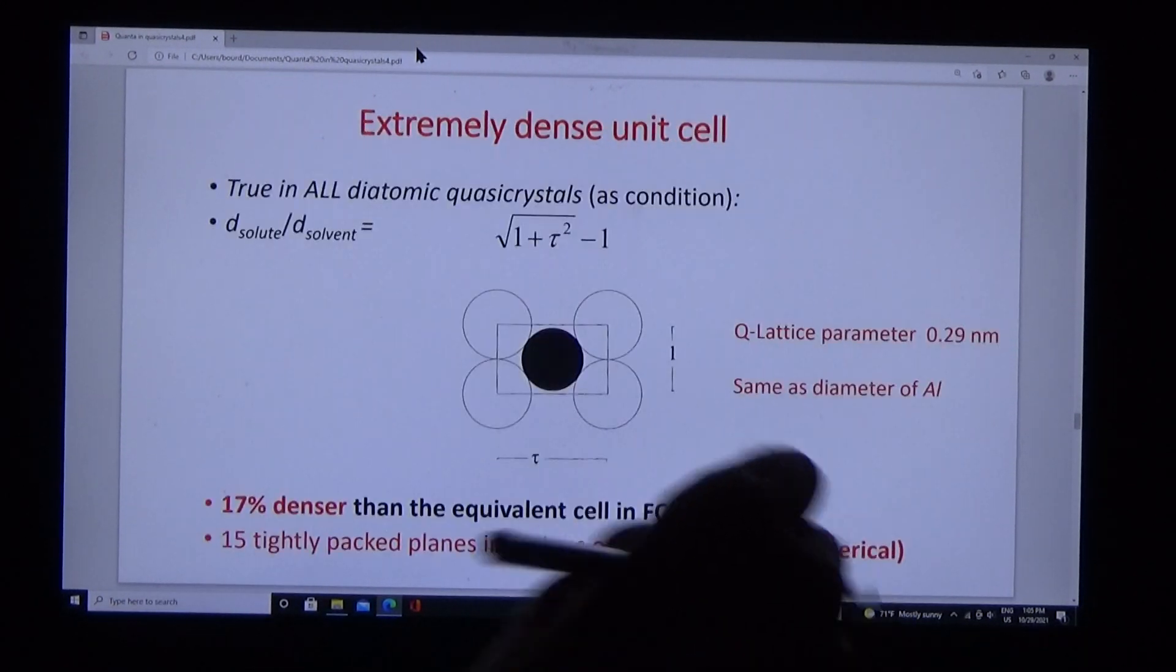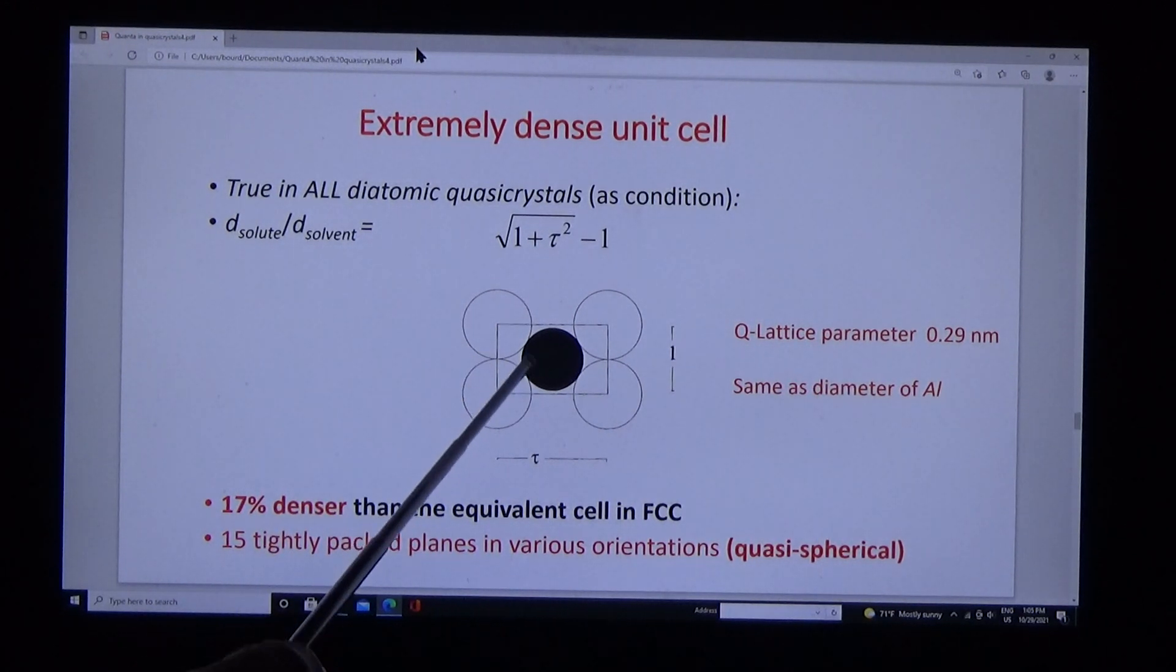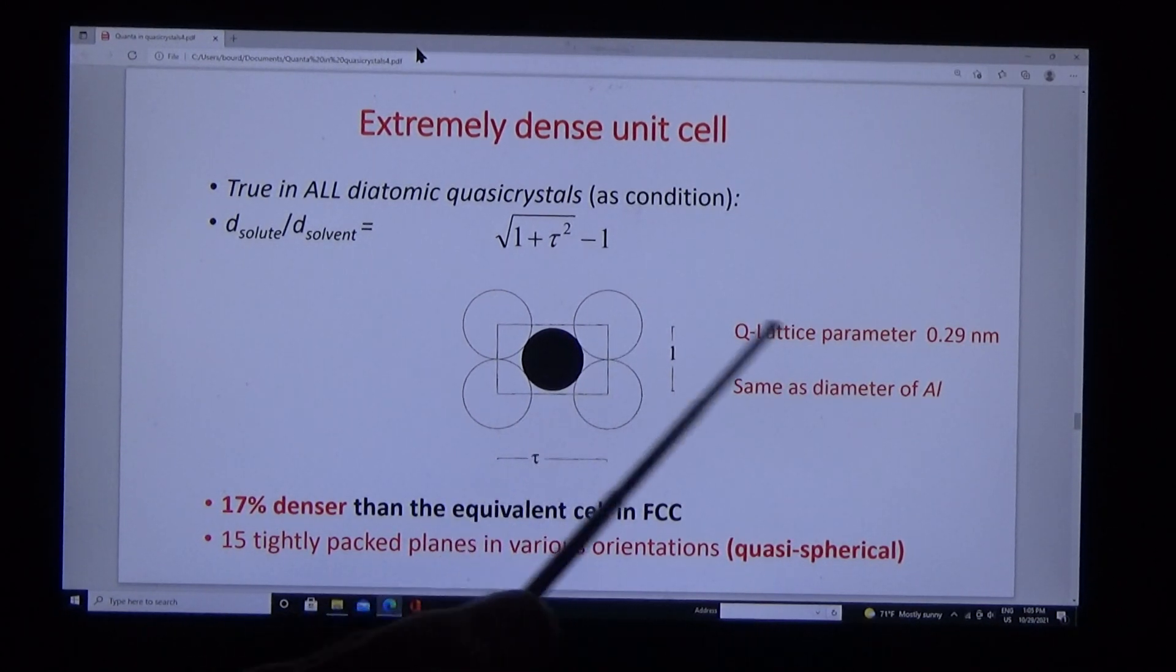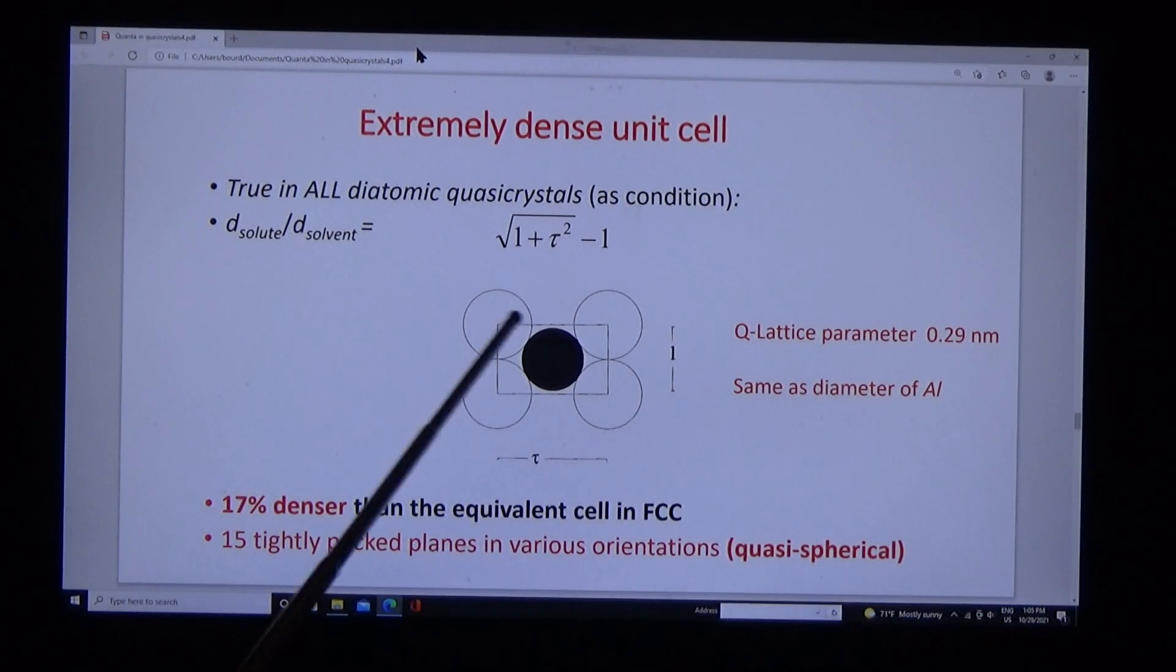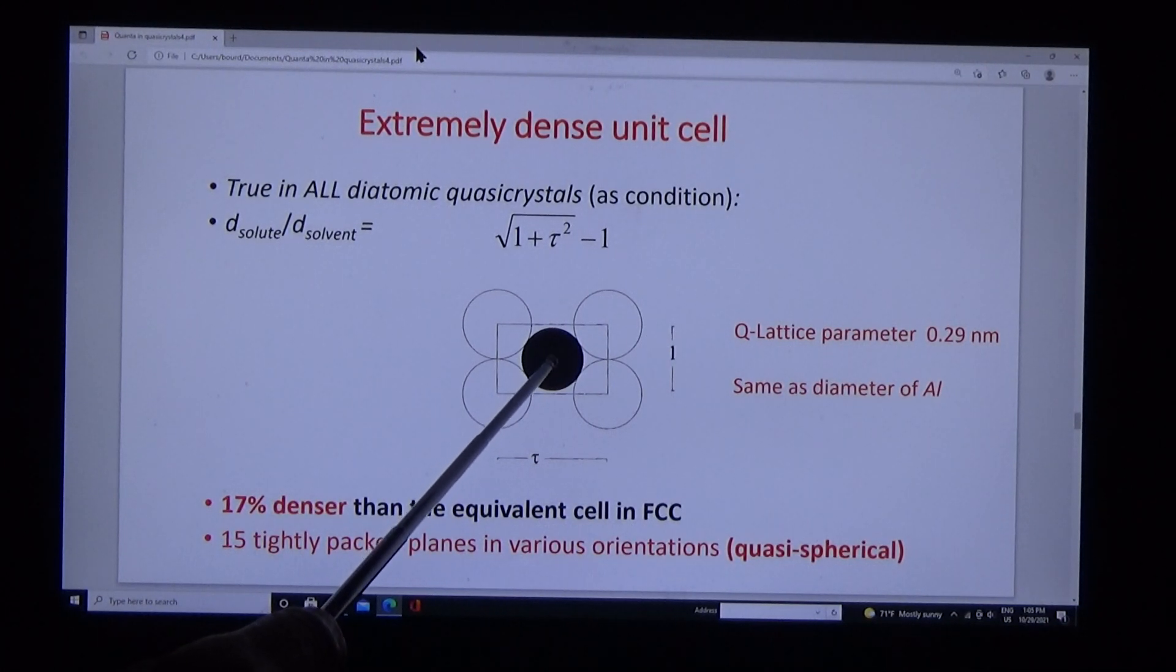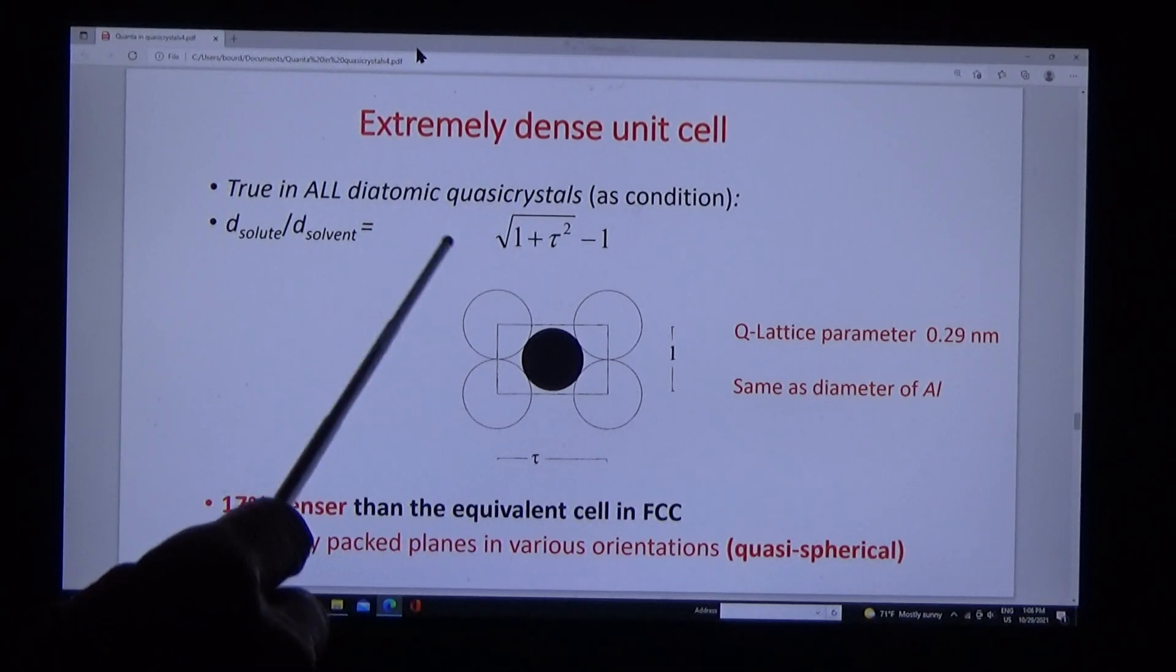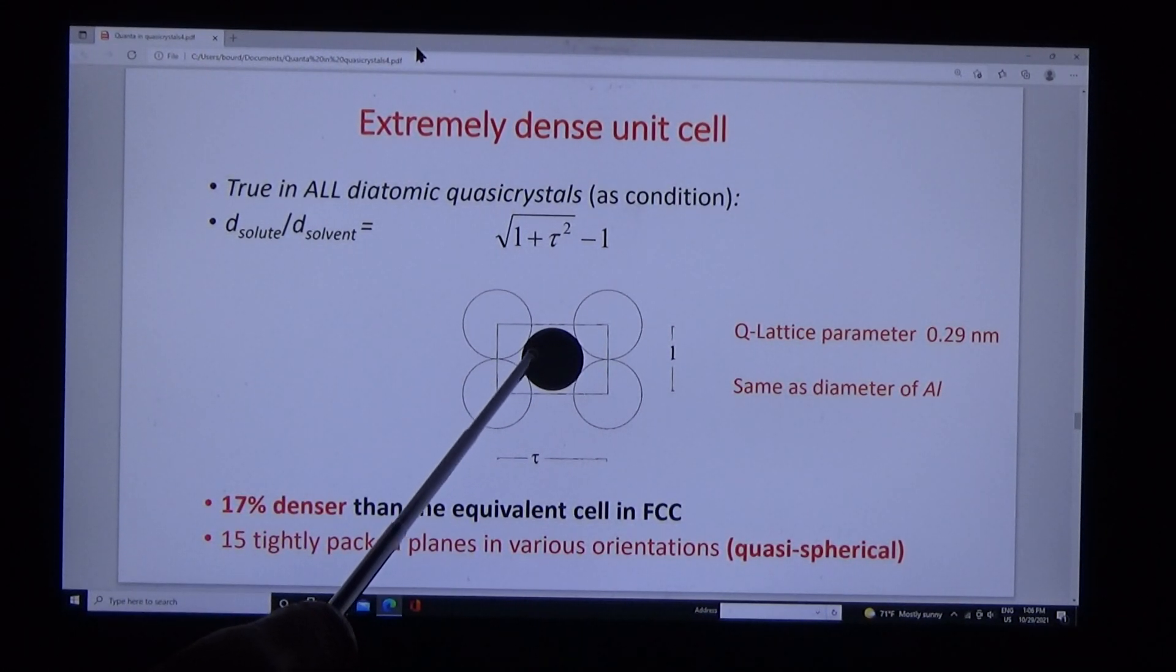Why is that important? Because this is the cross-section of the unit cell, and the lattice parameter equals the diameter of aluminum: 0.29 nanometers. This cross-section is also very important in its own right. The structure is due to the precise relationship between the diameters of the solute and solvent atom. There are 15 cross-sections at various angles in the icosahedral unit cell, so it's quasi-spherical. And so all the clusters, etc., etc.